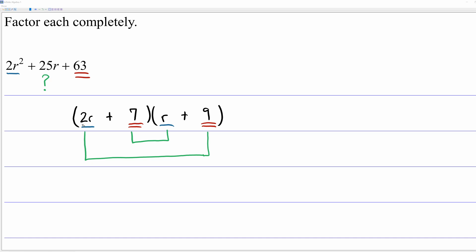So let's check. In the blue blanks, 2r times r is 2r squared. In the red blanks, 7 times 9 is 63. But you have to test the outside and the inside to see if you get the correct middle term.